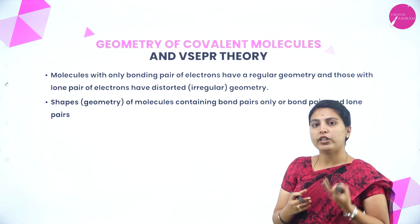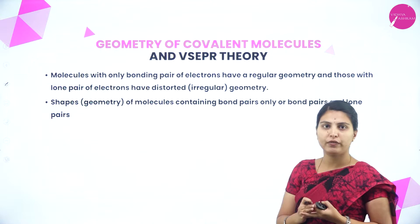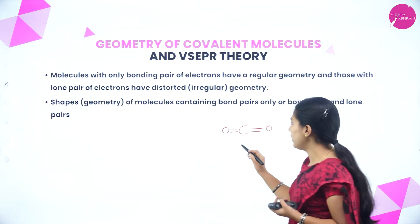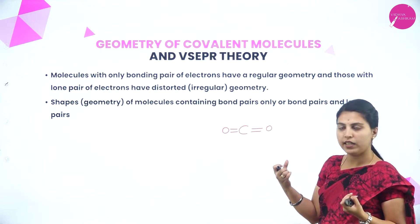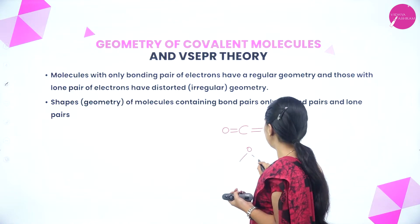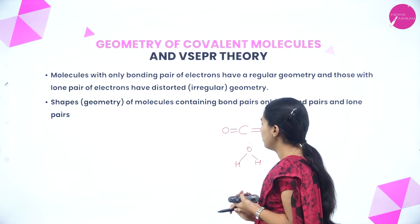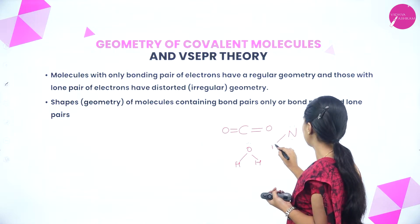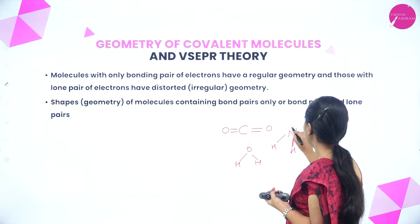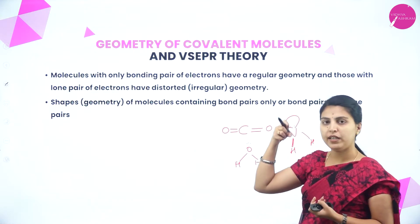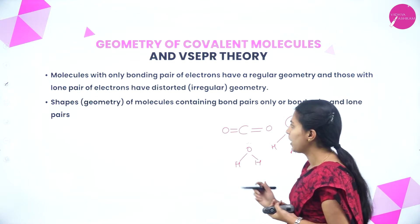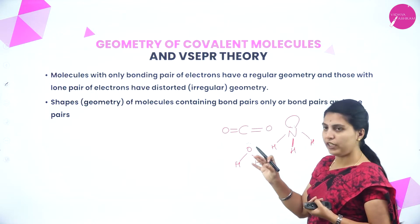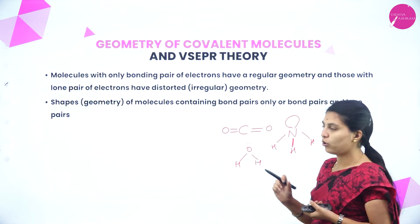If a molecule contains only bond pair electrons, there is no repulsion and the geometry is regular. If a lone pair is present, it repels and distorts the geometry of the molecule. The shapes of molecules containing bond pairs only, or both bond pairs and lone pairs, are shown in the table.